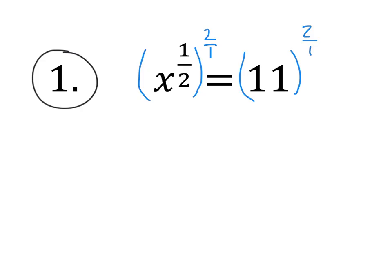When we square the left side of the equation, the one half becomes one, and it just leaves us with x all by itself. And so x is going to equal 11 squared, and 11 squared is 121. And that's our final answer.